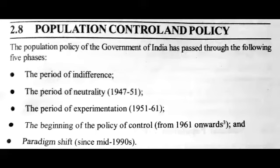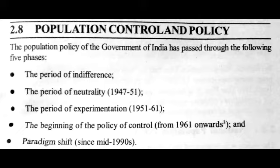Population control and policy: the population policy of the Government of India has passed through the following five phases — the period of indifference, the period of neutrality from 1947 to 1951, the period of experimentation from 1951 to 1961, the beginning of the policy of control from 1961 onwards, and a paradigm shift since the mid-1990s.